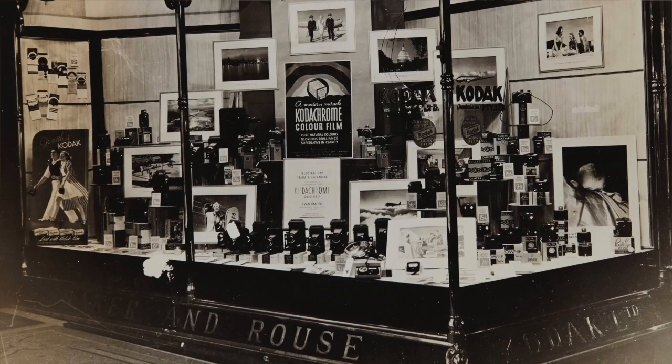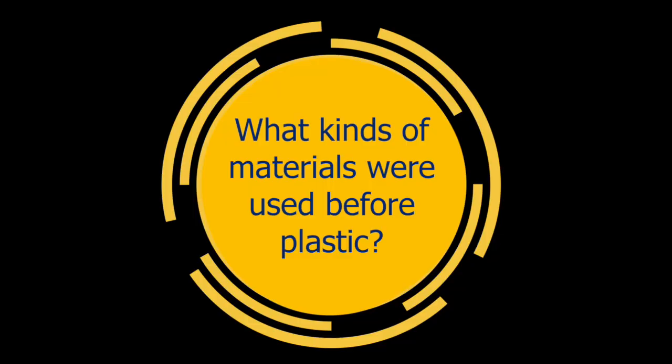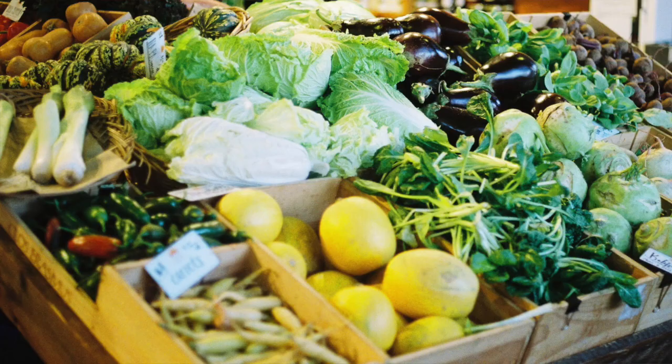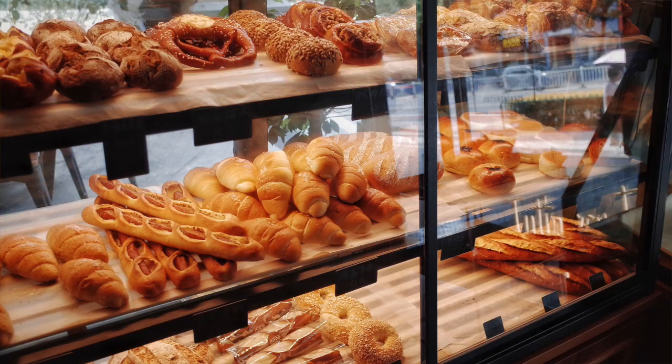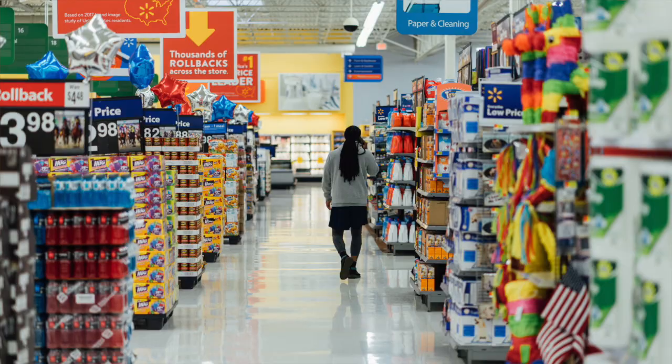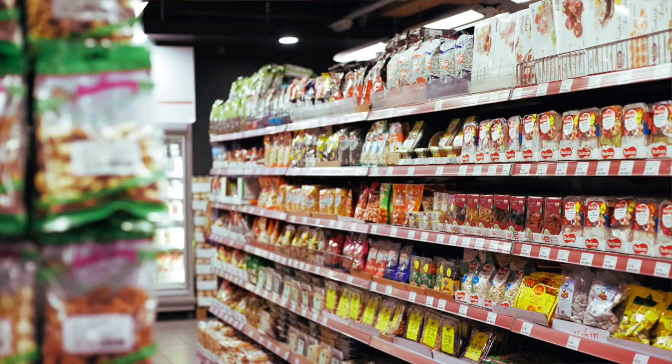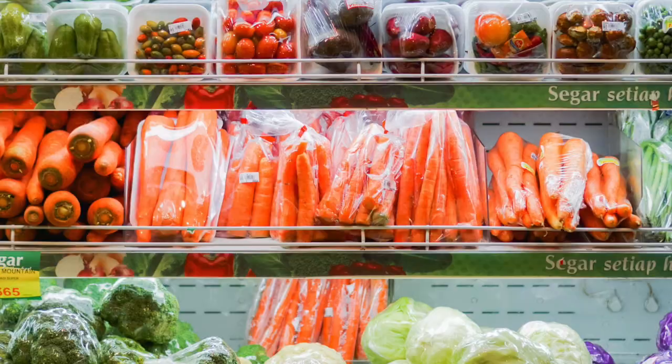After the war, more and more things began to be made of plastic. But even in 1950s Ireland, there wasn't a lot of plastic to be seen. Before plastic, things were made from materials like paper, metal, glass, and wood. Now think about going into a shop nowadays — there's so much plastic that it's hard to imagine how you would run a shop without using any.